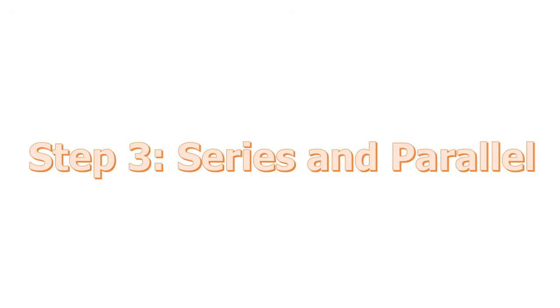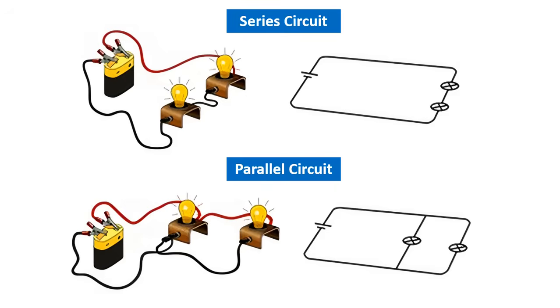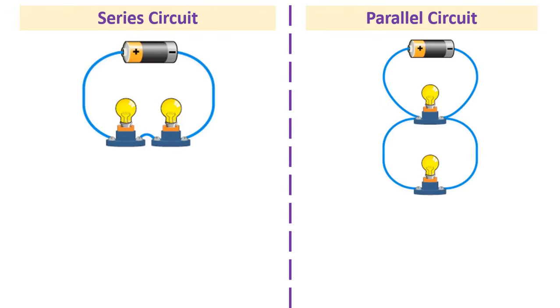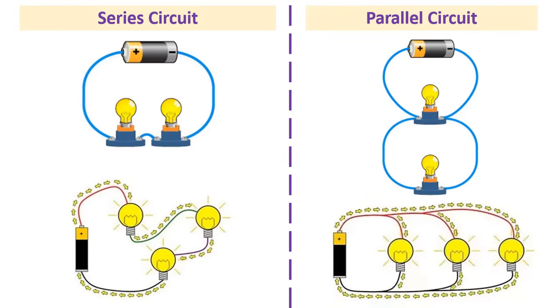Step 3. Series and Parallel. There are two different ways in which you can wire things together called series and parallel. In the circuits on the left, the lamps are connected in series with the battery. In series connected circuits, the same current flows through all loads.